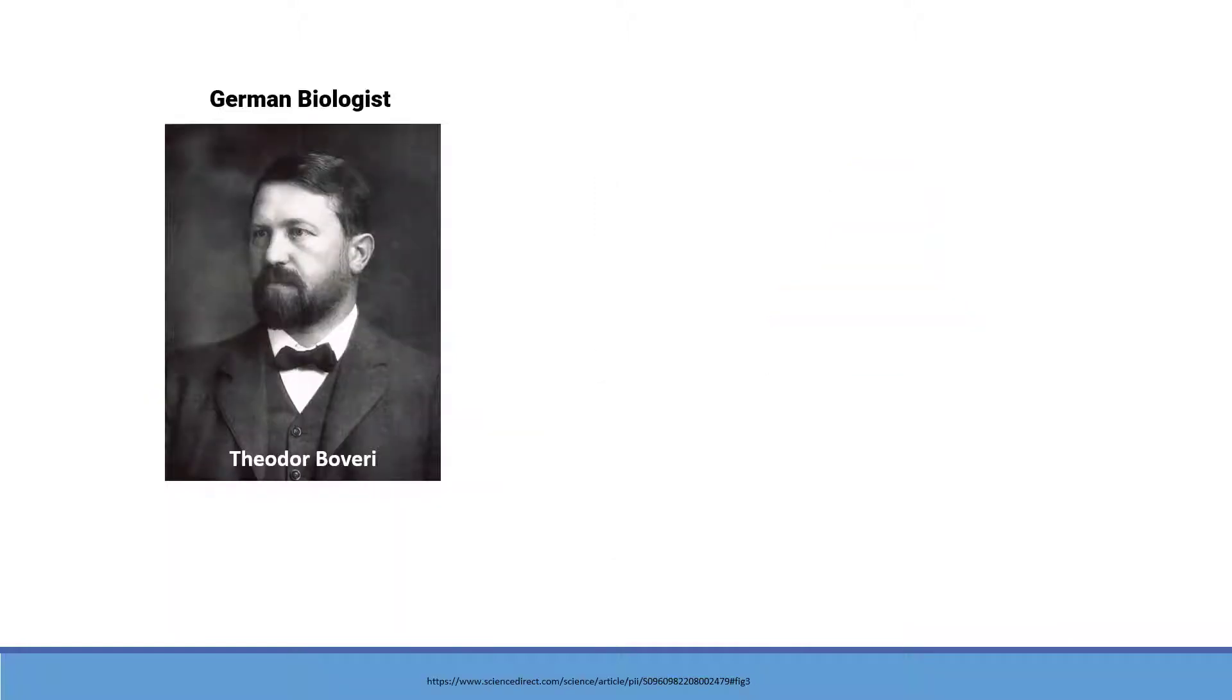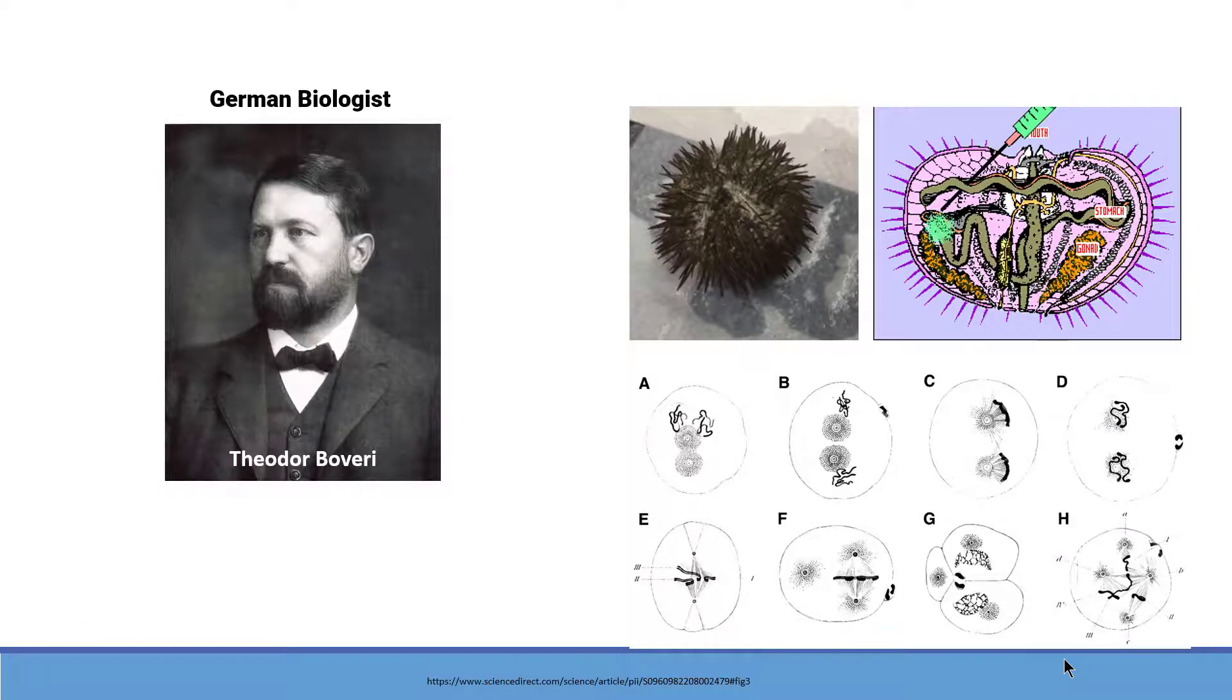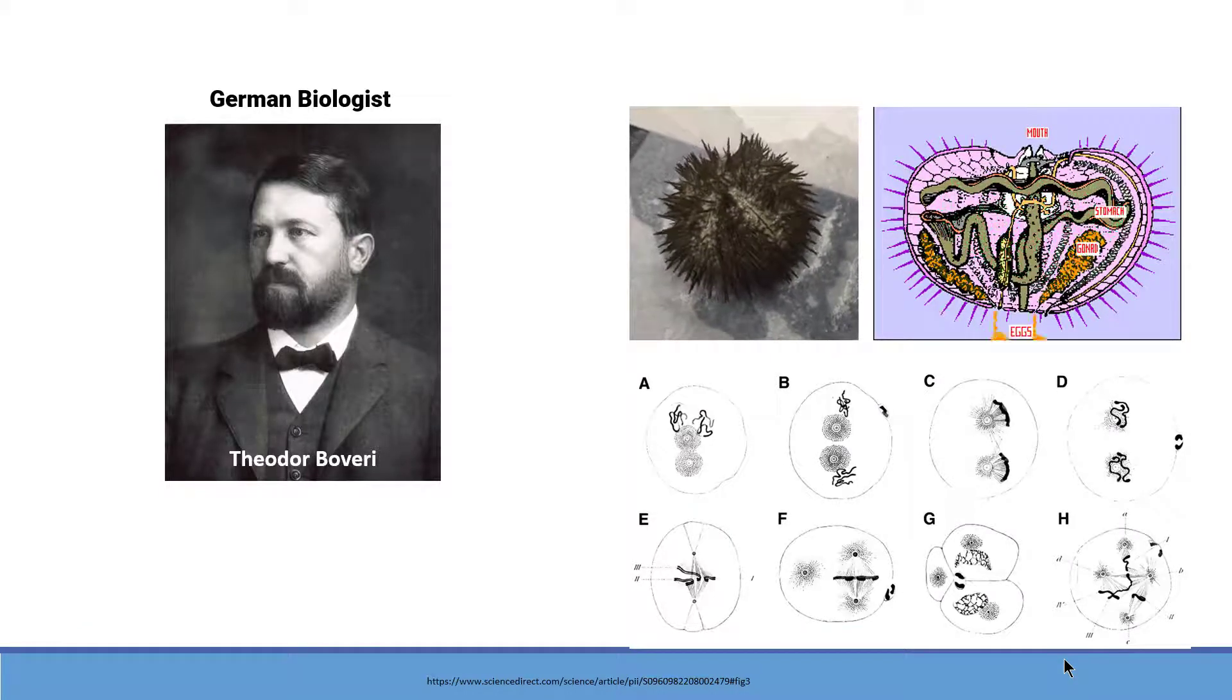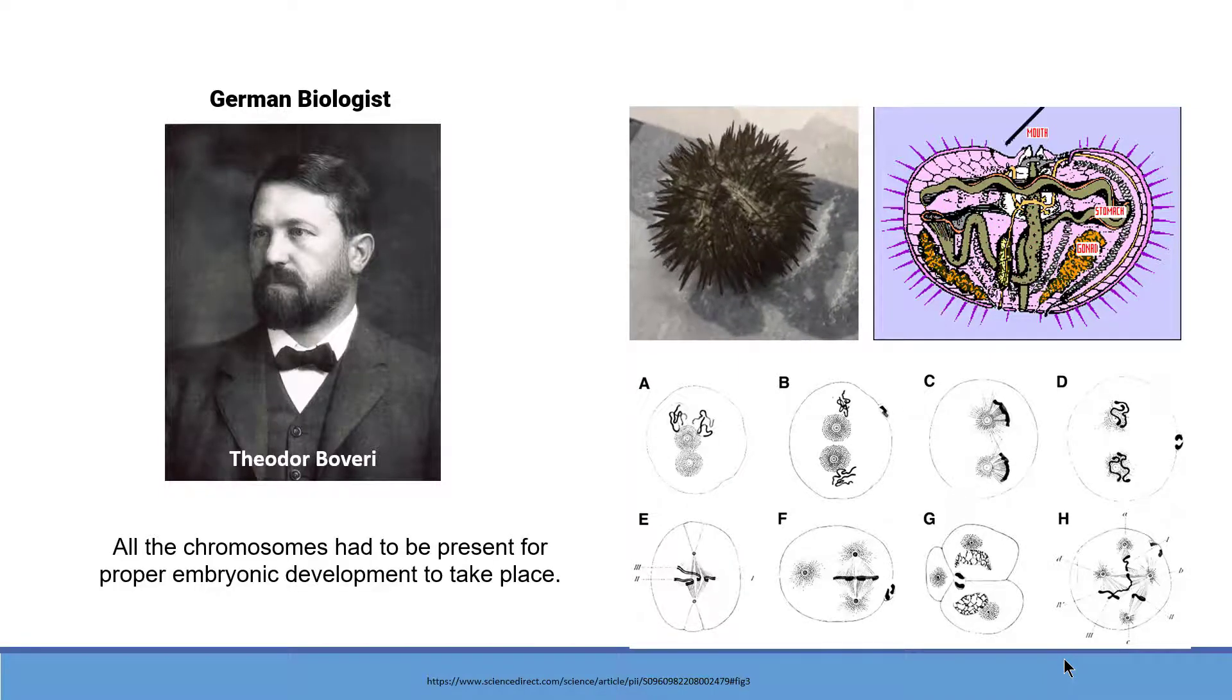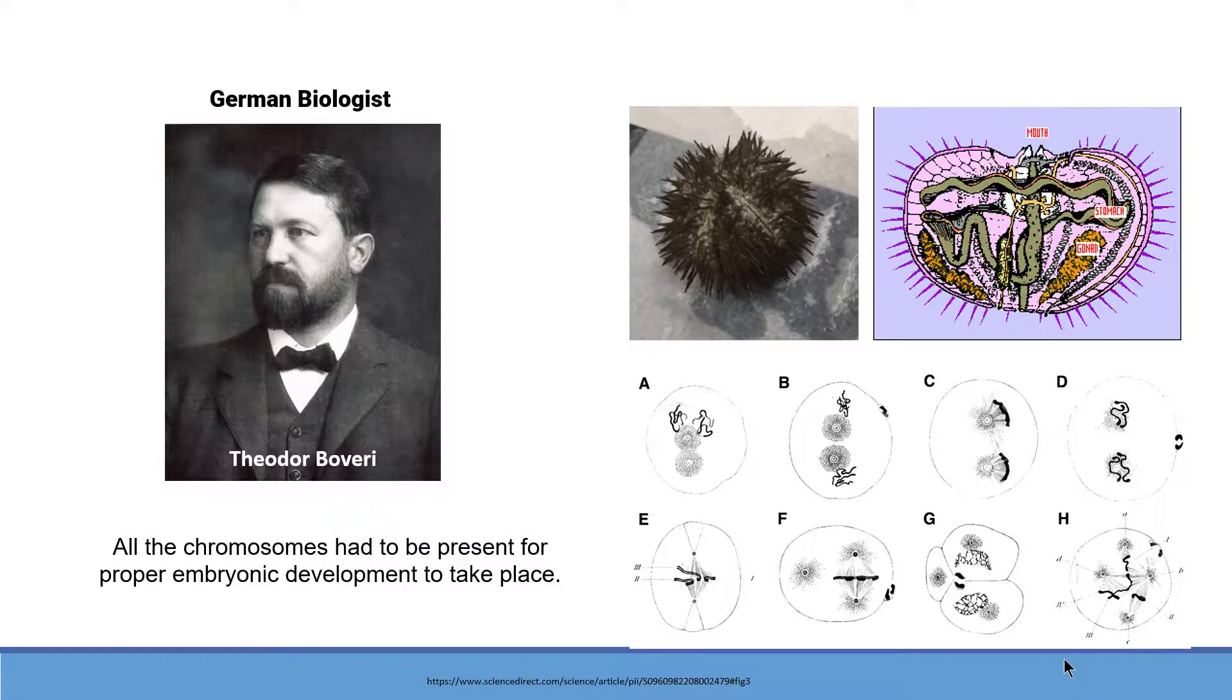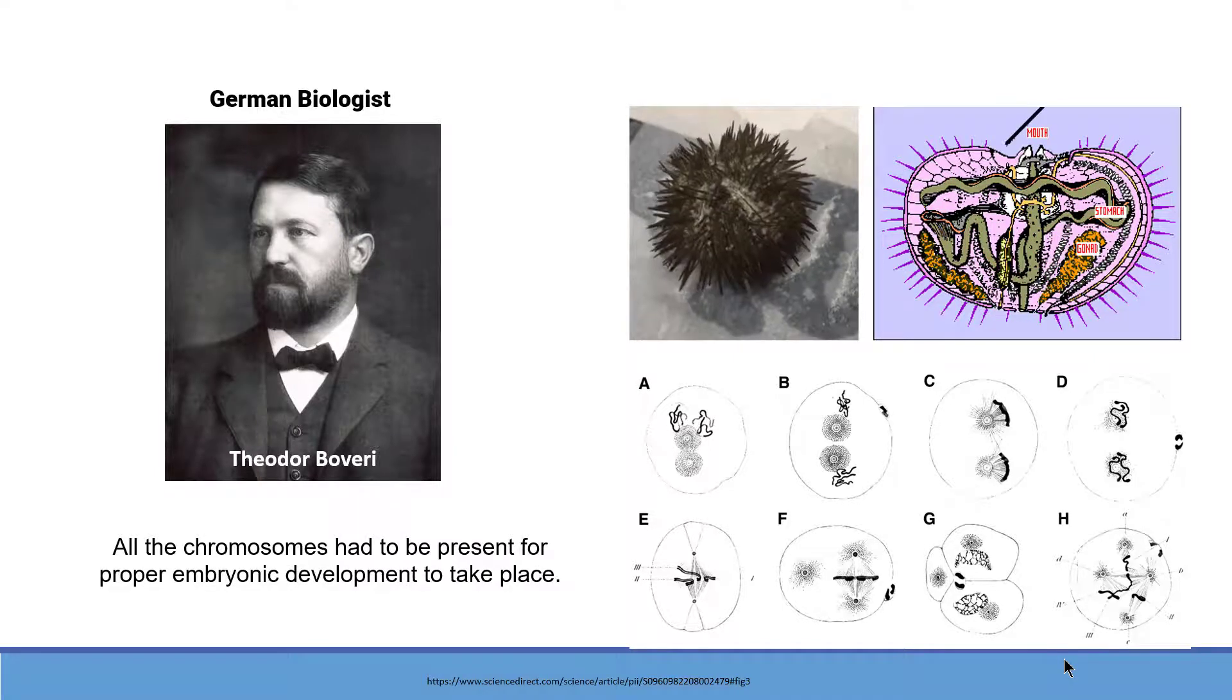Theodor Boveri was a German biologist. He was working on sea urchin and how its embryo grows and divides. After doing a lot of experiments, he concluded that all chromosomes had to be present for proper embryonic development to take place.